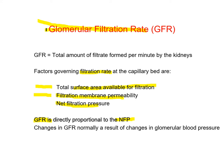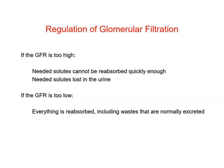If GFR is too high, too much filtrate is formed and cannot be reabsorbed fast enough — solutes that normally get reabsorbed are lost in the urine. An abnormally high GFR causes water loss and sodium loss. Conversely, if GFR is too low, the volume of filtrate is lower than normal.